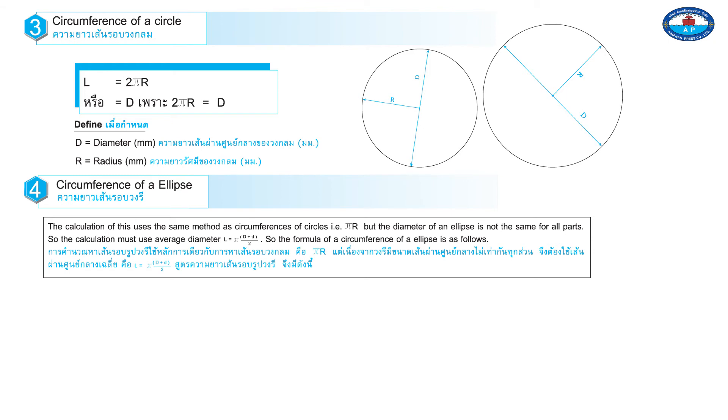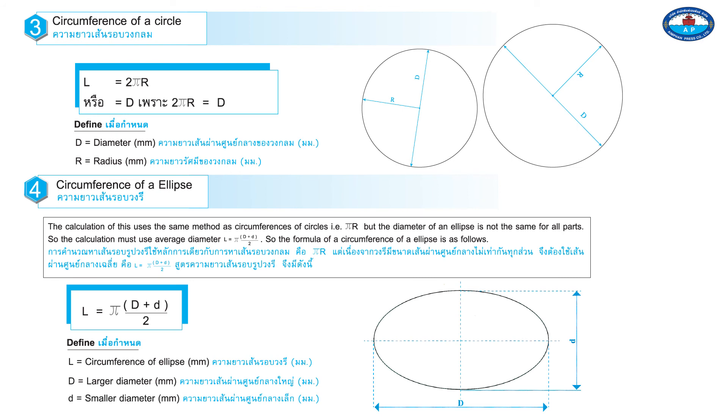So the calculation must use average diameter. L equals pi times capital D plus lowercase d divided by 2. So the formula of a circumference of an ellipse is as follows: L equals pi times capital D plus d divided by 2.